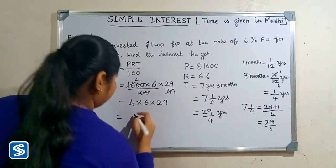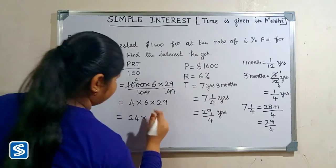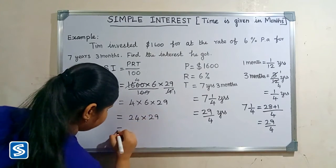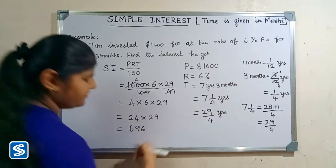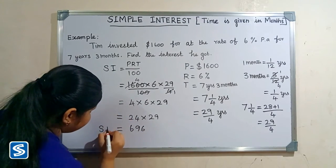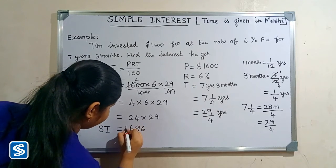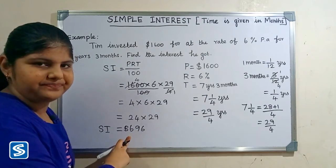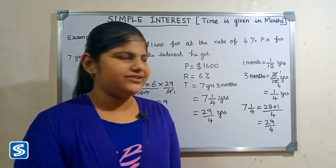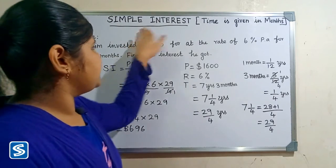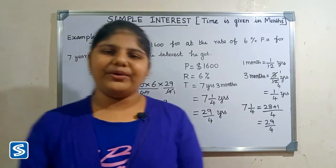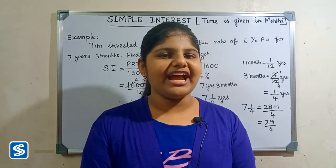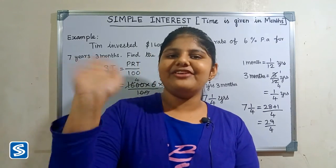24 multiplied by 29 will be 696, so simple interest is equal to 696 dollars. Hope all friends understood how to find simple interest when the time is given in months. If you have not subscribed to my channel, kindly subscribe and press the bell button so you can receive all updated videos regularly. Bye friends, thank you.